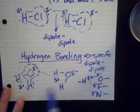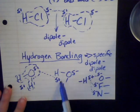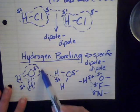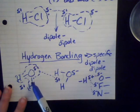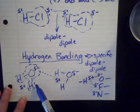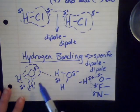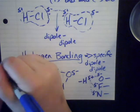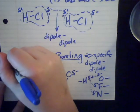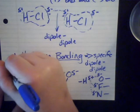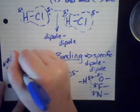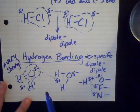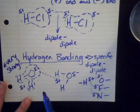Oxygen, fluorine, and nitrogen are the only three elements that can hydrogen bond with a partially positive hydrogen on another molecule. You have your hydrogen that's partially positive on one molecule attracted to an oxygen that's partially negative on another — that's hydrogen bonding. In terms of strength, hydrogen bonding is very strong; it is a very strong attractive force, and it allows for some really unique characteristics of water, which we'll get into in the next chapter.